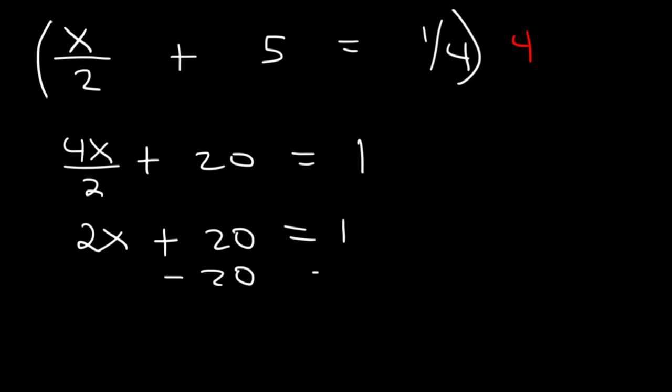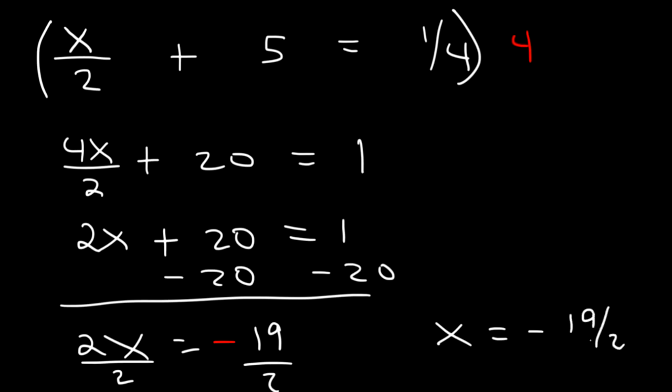Now let's subtract both sides by 20. Therefore 2x is 1 minus 20. And so 1 minus 20 is negative 19. Now the last thing we need to do is divide both sides by 2. So x is equal to negative 19 divided by 2.